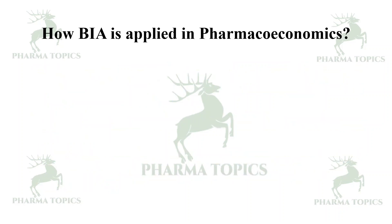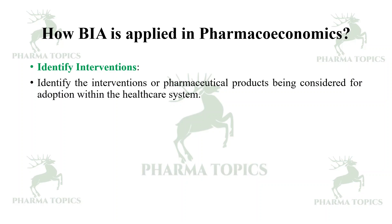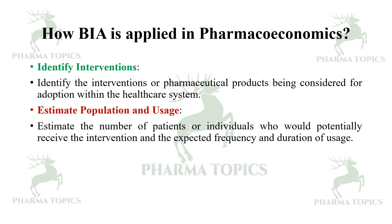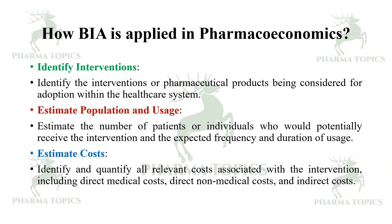How is BIA applied? First, identify the interventions or pharmaceutical products being considered for adoption. Estimate the population and usage — estimate the number of patients who would potentially receive the intervention and the expected frequency and duration of usage. Then estimate the costs — identify and quantify all relevant costs associated with the intervention, including direct medical costs, direct non-medical costs, and indirect costs.